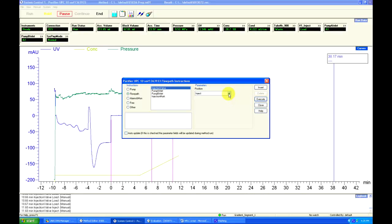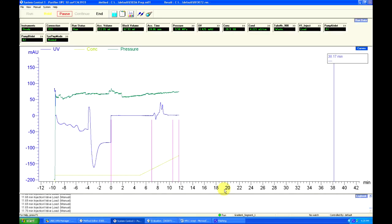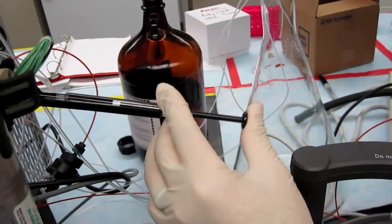Once the needle is attached, we can change the parameter back to Load. Make sure to click once or even multiple times on the Execute button to ensure you have an airtight seal between the needle and the injection valve. Then, we can inject our sample.